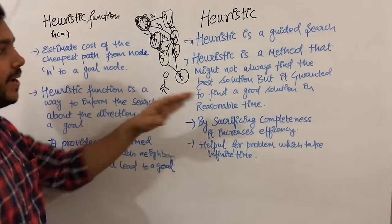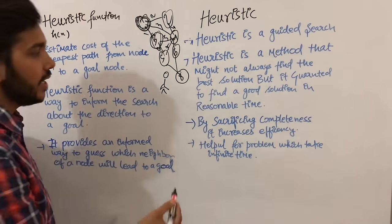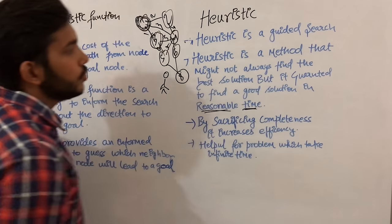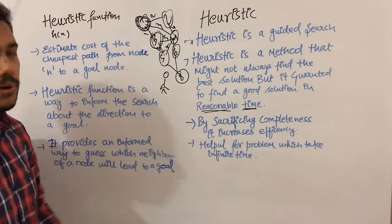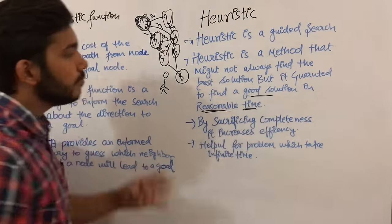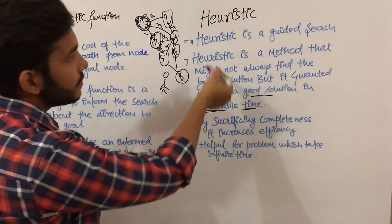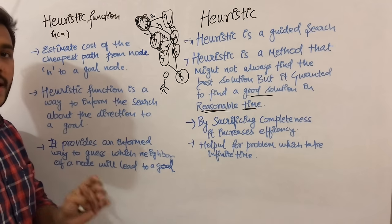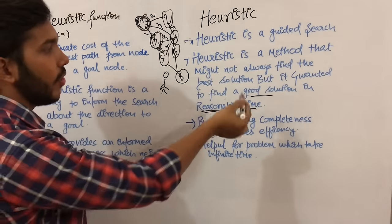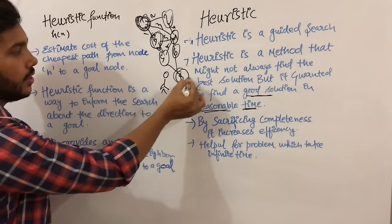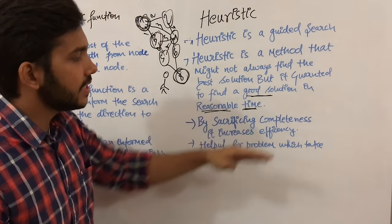Heuristic is a method that might not always find the best solution, but it guarantees to find a good solution in reasonable time. In heuristic, time is more important. It does not say that every time it will give the best solution — it gives a good solution in reasonable time. Suppose there is a problem in which infinite time would be taken; for that type of problem heuristic is very useful because at each point it will guide you to reach the goal node.